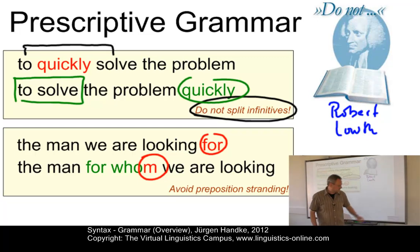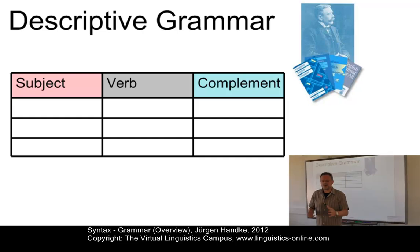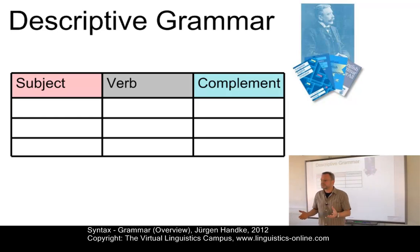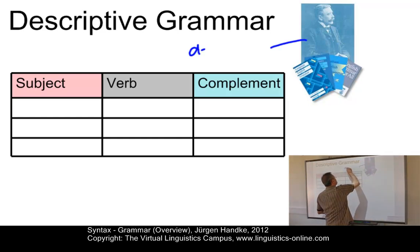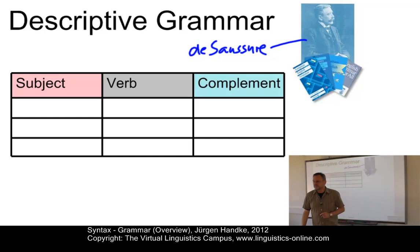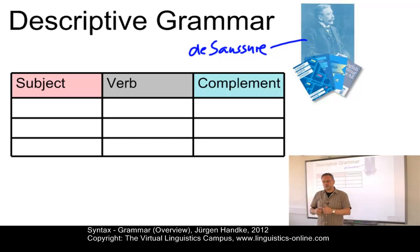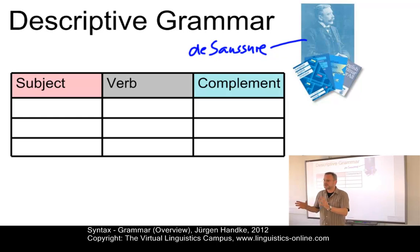Let's now look at the next type of grammar: the descriptive grammar. In contrast to the prescriptivism of the 19th century and earlier, linguistics, like other modern sciences, is essentially descriptive in character. This was first emphasized by Ferdinand de Saussure, a Swiss linguist of the late 19th and early 20th century, who you see here, and who is often considered to be the founder of modern linguistics. He established the structural study of language, emphasizing the arbitrary relationships between the linguistic signs and that which they signify.